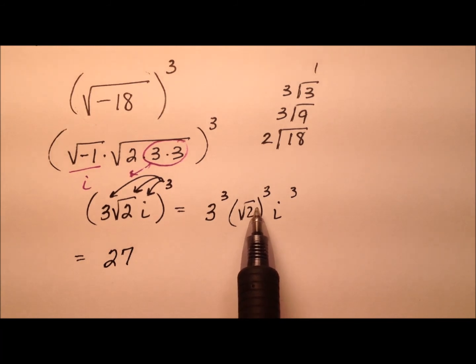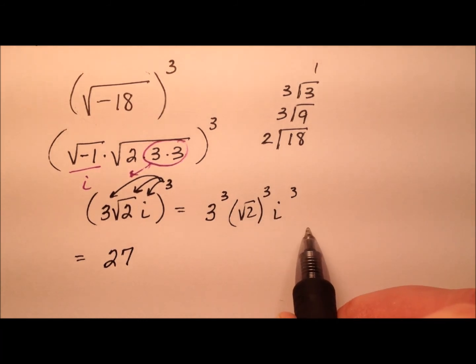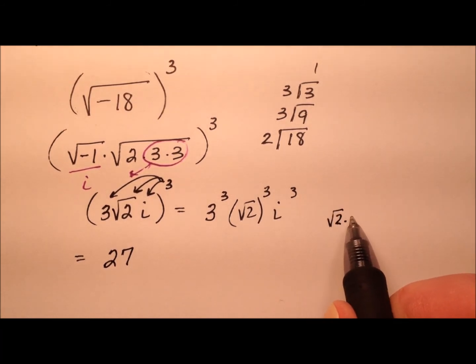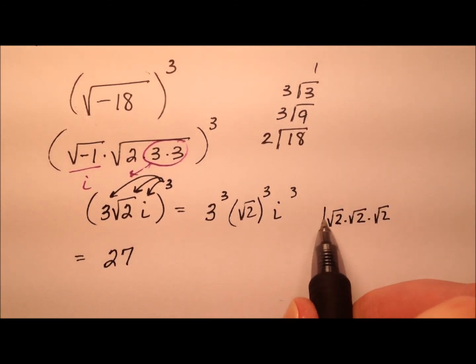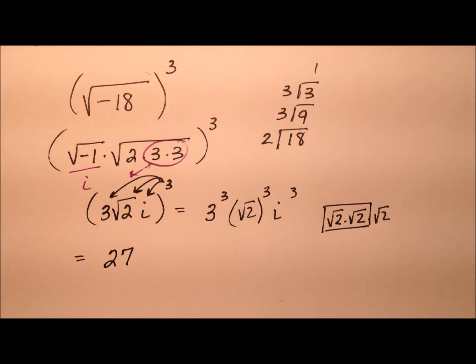And if we have the square root of 2 cubed, that's going to be the same as the square root of 2 times the square root of 2 times the square root of 2. And of course, radical 2 times radical 2 makes a real 2. So that's just going to be 2 radical 2, and then times i cubed, and i cubed we know is negative i.